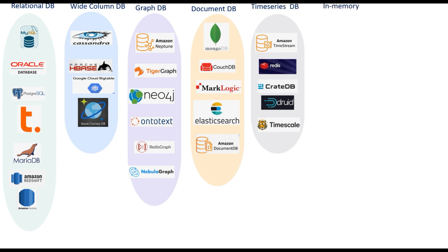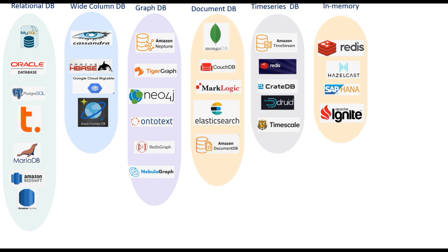Next up is in-memory databases. An in-memory database is a data storage software that hosts all of its data in the memory of the host. The main difference between a traditional database and an in-memory database is where data is stored: a relational database stores data in solid-state drives, while an in-memory database stores data in random access memory, or RAM, and hence is orders of magnitude faster than disk access.